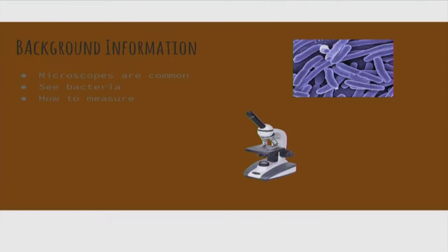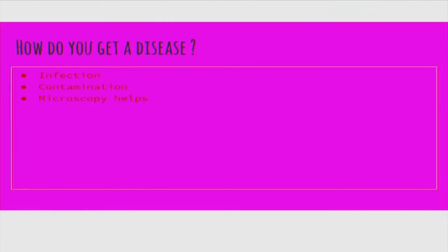Please look at the slides and give your student comments, and we are going to listen to your comments first and then go through a review of the video presentation. So this is the first slide - background information: microscopes are common, see bacteria, how to measure. There is a picture of bacteria and a microscope. The next slide says: how do you get a disease - contamination, infection, microscopy helps.